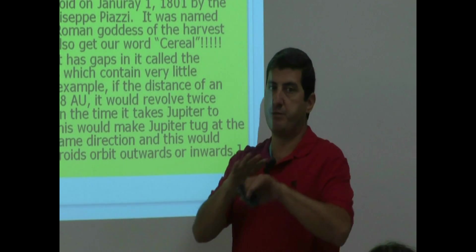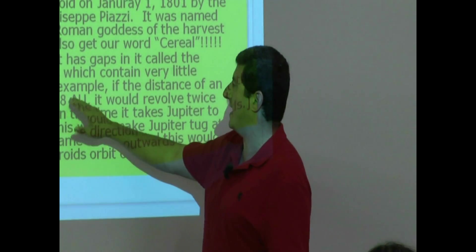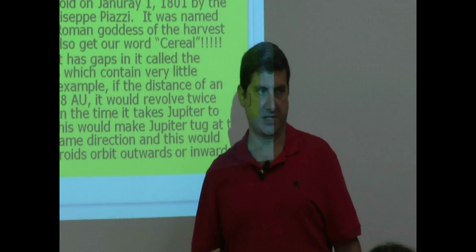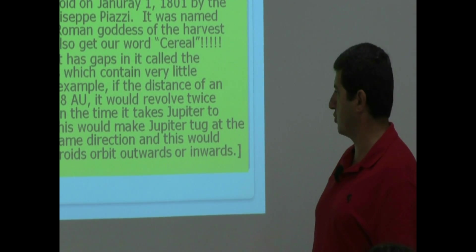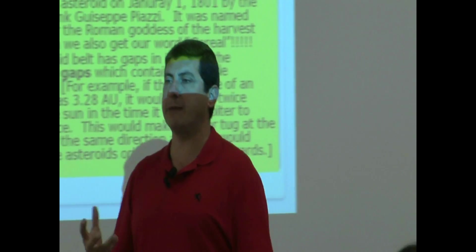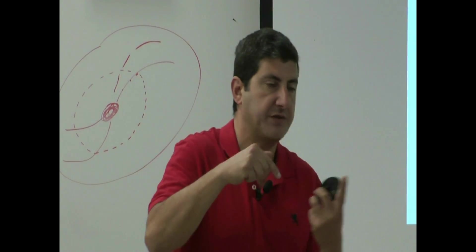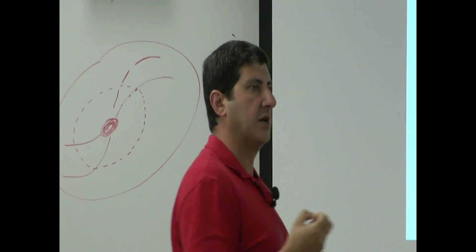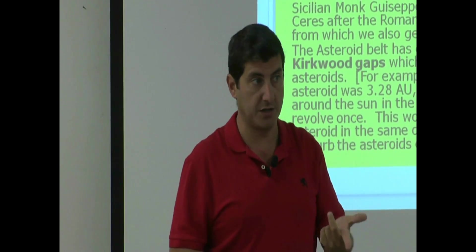Those Kirkwood gaps are more or less free of asteroids. For example, if the distance of an asteroid was 3.28 AUs, it would revolve twice around the sun in the same time it takes Jupiter to revolve once. This would make Jupiter tug at the asteroid in the same direction, and this would perturb the asteroid's orbit outwards or inwards. So, the reason that these gaps are created is due to resonance pattern with the orbit of Jupiter. If they happen to be at a certain distance from the sun, and then every time Jupiter is tugging at it in the same direction, it's either going to pull it inward or outward, and that's going to create the gap, you see? So, these resonance patterns also exist in the rings of Saturn, which makes its gaps.